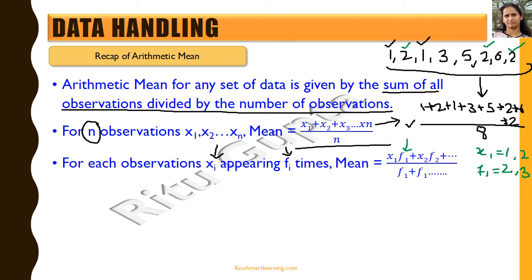For all other values of x, which are 3, 5, and 6, the corresponding frequency is 1. So instead of adding 1 two times and adding 2 three times, we can multiply each observation with its frequency — x1·f1 — and add it to the product x2·f2, and so on. The result is the same as the normal addition divided by the number of observations. If f1 is 2, f2 is 3, and f3, f4, f5 are 1 each, the denominator becomes 8 again.